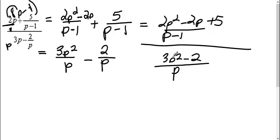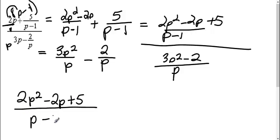Now I have a fraction over a fraction, so what I need to do is multiply by the reciprocal. So I get 2p squared minus 2p plus 5 over p minus 1. I'm multiplying by the reciprocal, so I'm going to multiply and I'm going to flip. p over 3p squared minus 2.